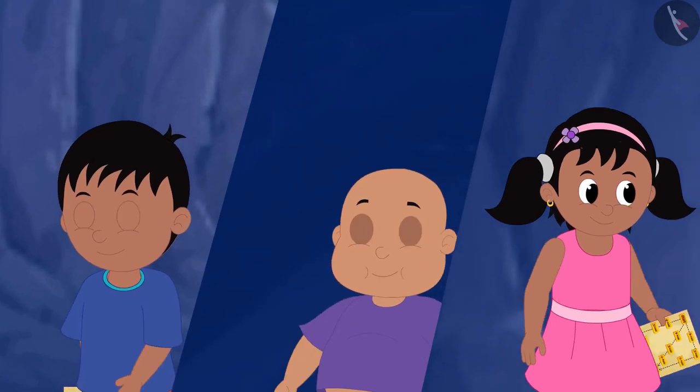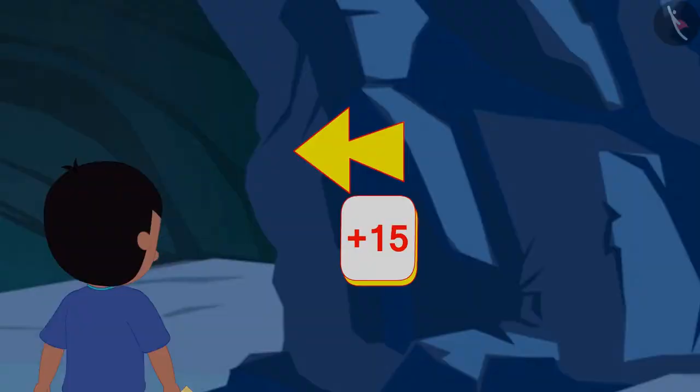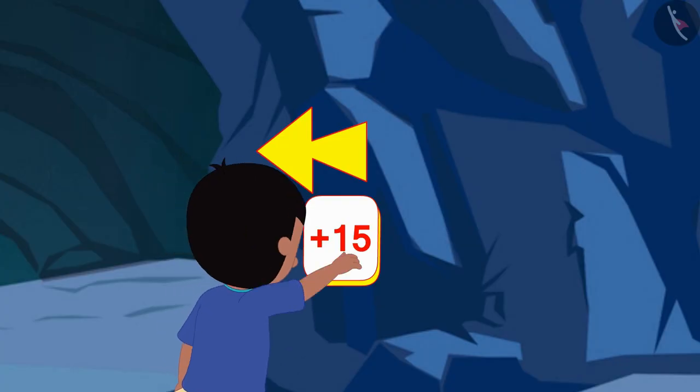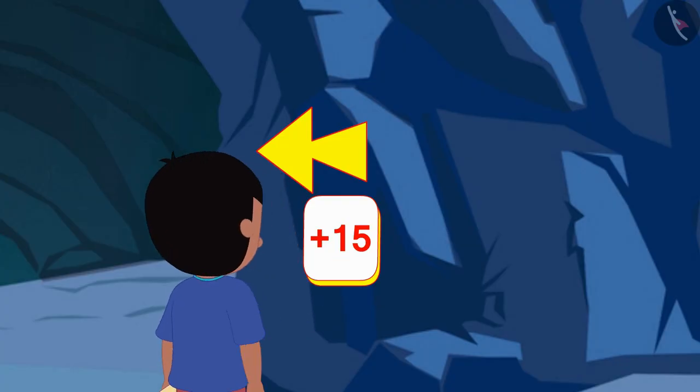Let's see what Raju got on his chosen path. Oh, here there's a symbol to add fifteen. Fifteen added to zero is fifteen. Raju wrote the addition on a paper.